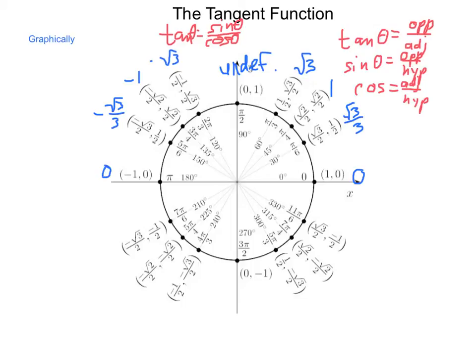Then, quadrant 3, we have negative divided by a negative. We would have radical 3 over 3, 1, radical 3 undefined, on the negative y-axis, because negative 1 divided by 0 cannot be done.